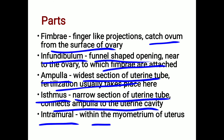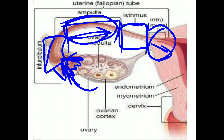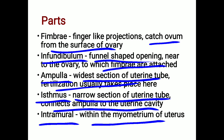The fifth part is the intramural part, which is present within the myometrium of the uterus and opens into the uterine cavity. In summary, the five parts are: fimbriae, infundibulum, ampulla (where fertilization occurs), isthmus (connects ampulla to uterine cavity), and the intramural part (within the myometrium).